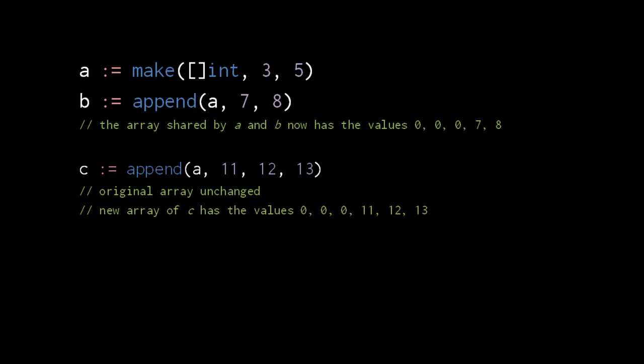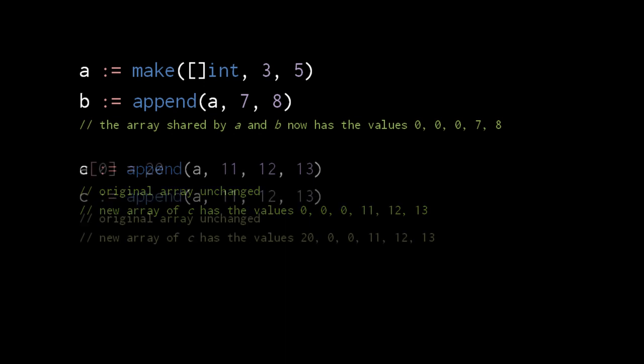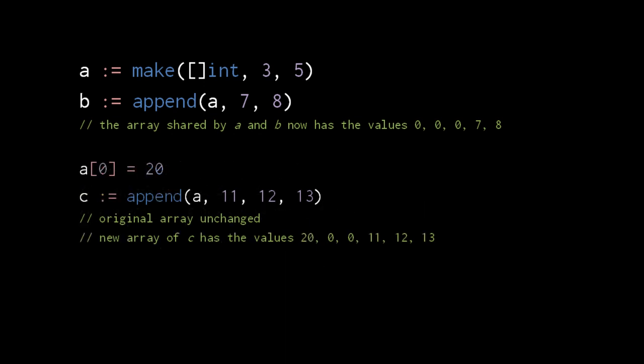When append creates a new, larger array, it copies the existing values from the original array. So if we assign 20 to index 0 of a before the second append, the new array will have the values 20, 0, 0, 11, 12, and 13.